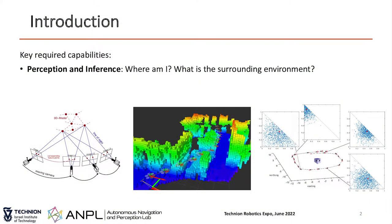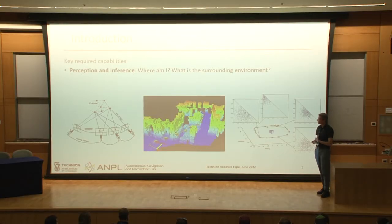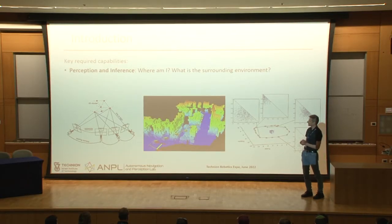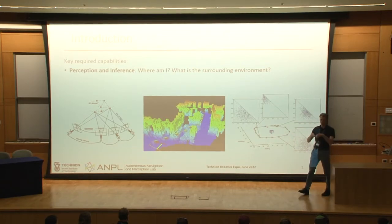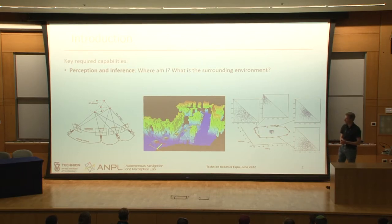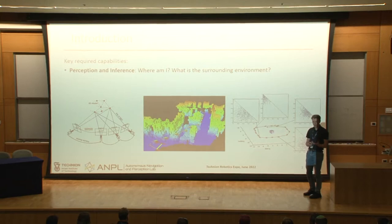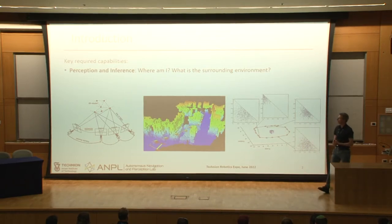Generally, talking about autonomy, the first question we care about is perception and inference: where is the agent located and what is the environment surrounding it? This question can be asked at different levels. One level can be purely geometric — imagine a camera moving through an environment observing landmarks, asking for the 3D position of each landmark. Similarly, we can represent the environment using an occupancy grid, discretizing the 3D world into voxels and asking whether each voxel is occupied.